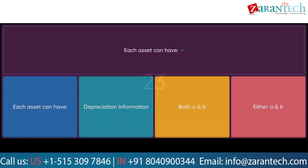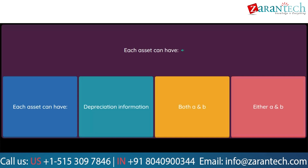Question: Each asset can have — Option 1: Each asset can have. Option 2: Depreciation information. Option 3: Both A and B. Option 4: Either A and B.